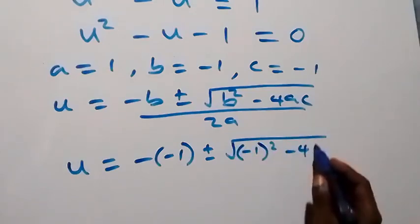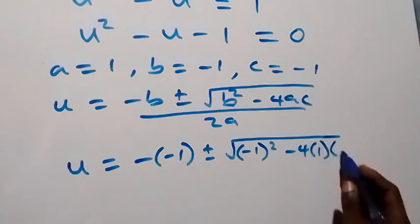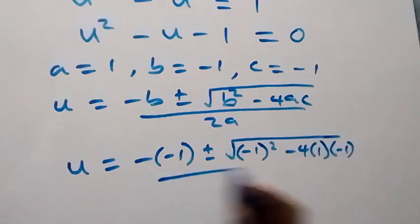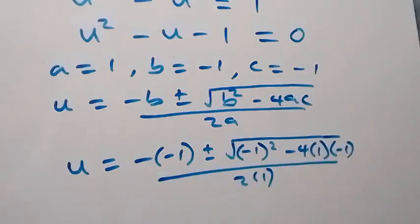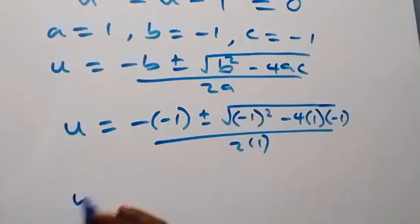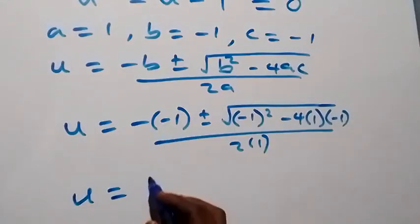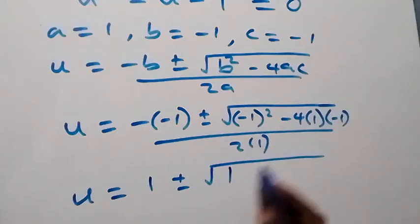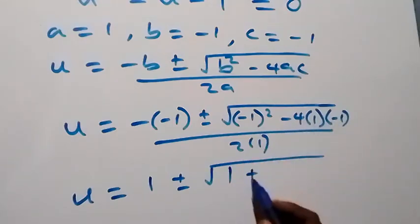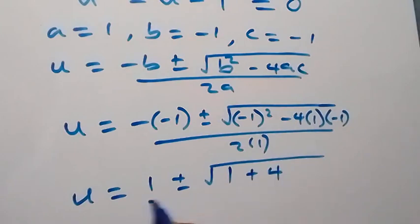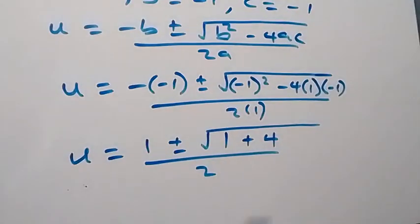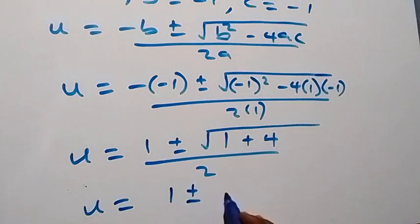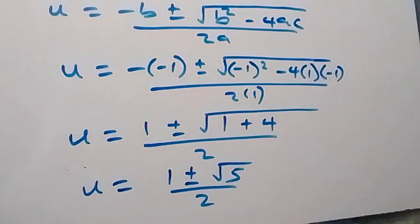Substituting in: we have u equals minus (minus 1) plus or minus square root of (minus 1) squared — which is 1 — plus 4, all over 2. This gives u equals 1 plus or minus root 5, all over 2.